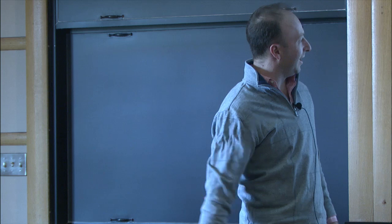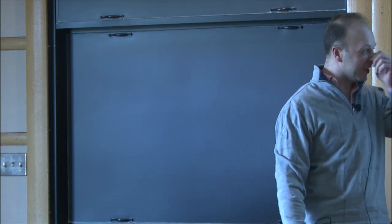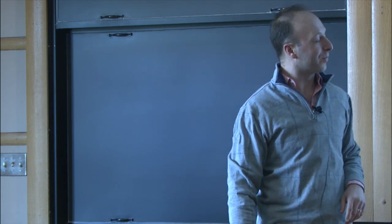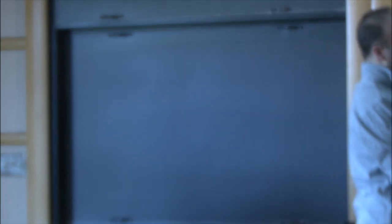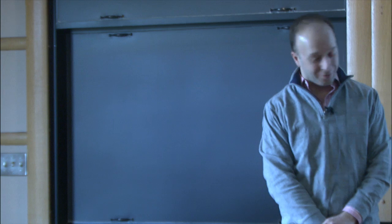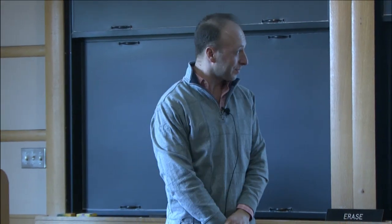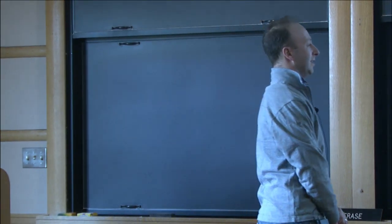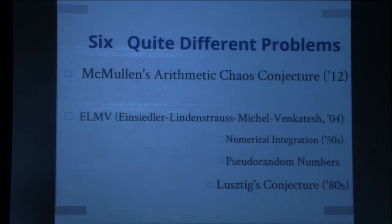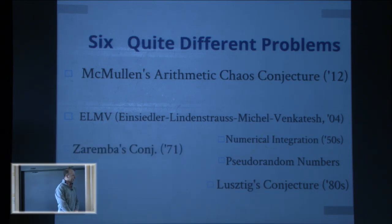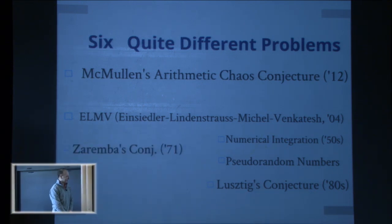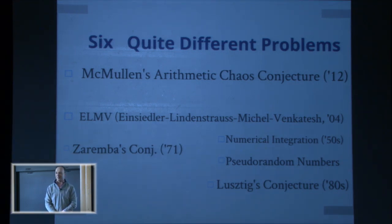Another arose in work of Einsiedler, Lindenstrauss, Michel, and Venkatesh from about a decade ago. Another is a very old problem in numerical integration, another old problem in pseudorandom numbers, a 30-year-old problem in modular representations called Lusztig's conjecture, and a problem in continued fractions called Zaremba's conjecture. So we're going to be bouncing around lots of different topics.